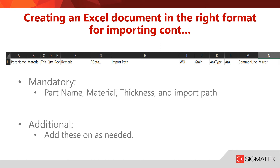The grain itself, whether or not I'm going to be using grain. Angle type, which would be absolute or incremental. The angle itself that I would like that type to be applied to, so 5 degrees, 15 degrees. Whether or not I allow common line, and whether or not I allow mirroring.